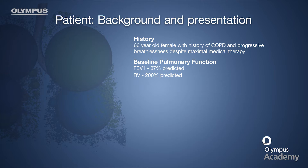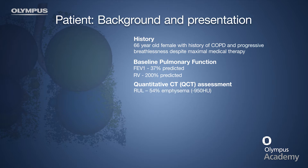She underwent a VETA assessment of her HRCT scan, which shows that the right upper lobe was 54% destroyed and the right lower lobe was 41% destroyed. The left upper lobe and left lower lobe were more homogenous.